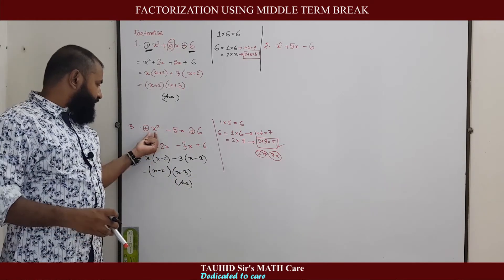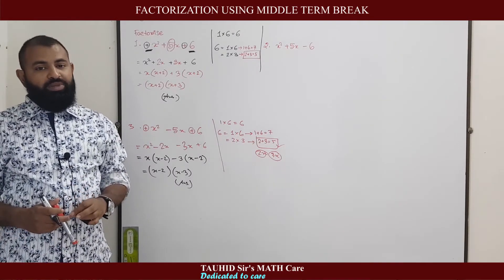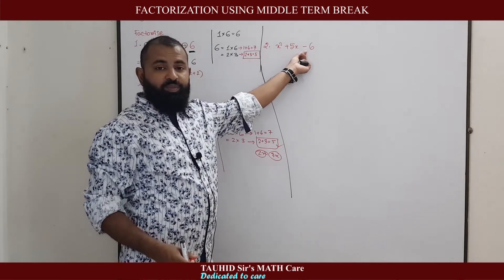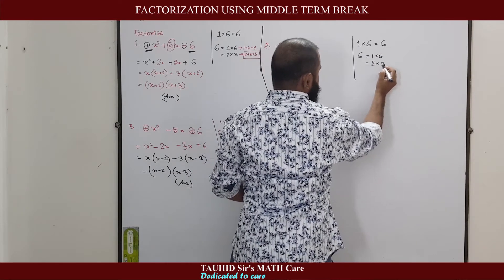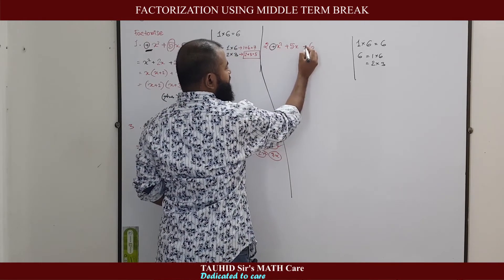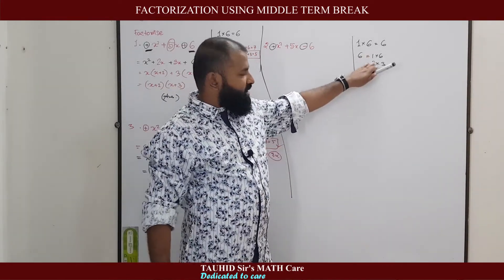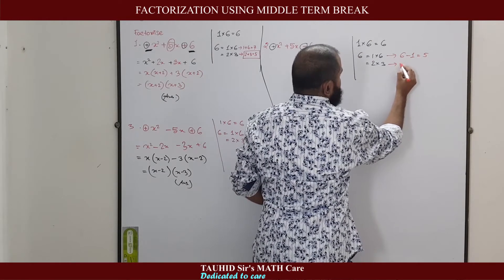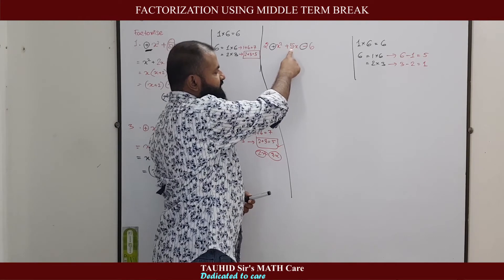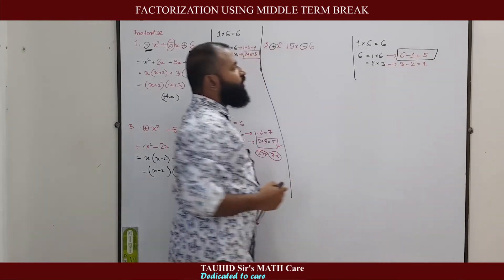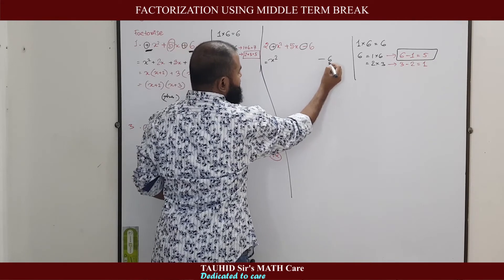This was the case where the signs of x² and the constant term are the same. But if they are not the same, consider x² + 5x − 6. We get 1×6 = 6, and 6 = 1×6 or 2×3. Since the sign of x² and the sign of the constant term are opposite, we subtract instead of add: 6−1 = 5, and 3−2 = 1. The pair 6 and 1 gives the difference equal to the middle term coefficient 5, so we use that pair.